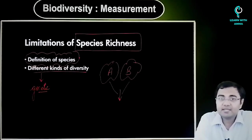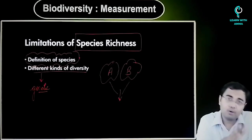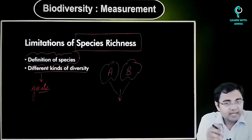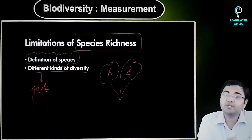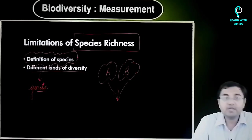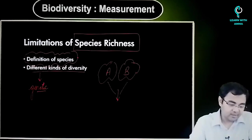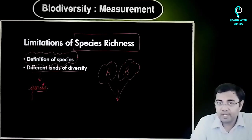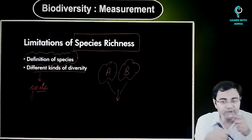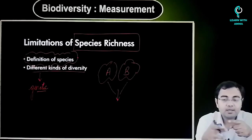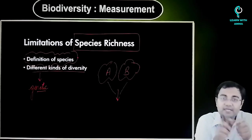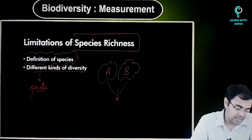Nevertheless, if we look at all the positives and negatives of different ways in which measurement of biodiversity can be done, you will always find that species richness becomes the best way to measure biodiversity. Although there are limitations to measuring biodiversity with respect to species richness, still this is the best way to define it. So measurement of diversity — why it is difficult, what are the different ways in which we do it, and why species richness is the most important way to do it — these are the key concepts to understand.